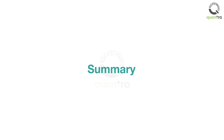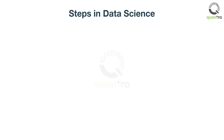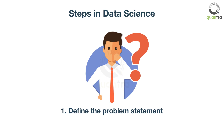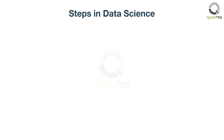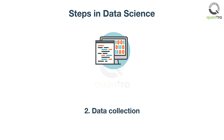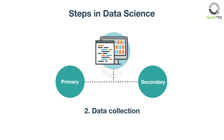Let's summarize some of the key learning from this course. The first step in data science is to understand the problem you want to solve. Then, you need to get the right data set. This can be collected through primary and secondary methods.